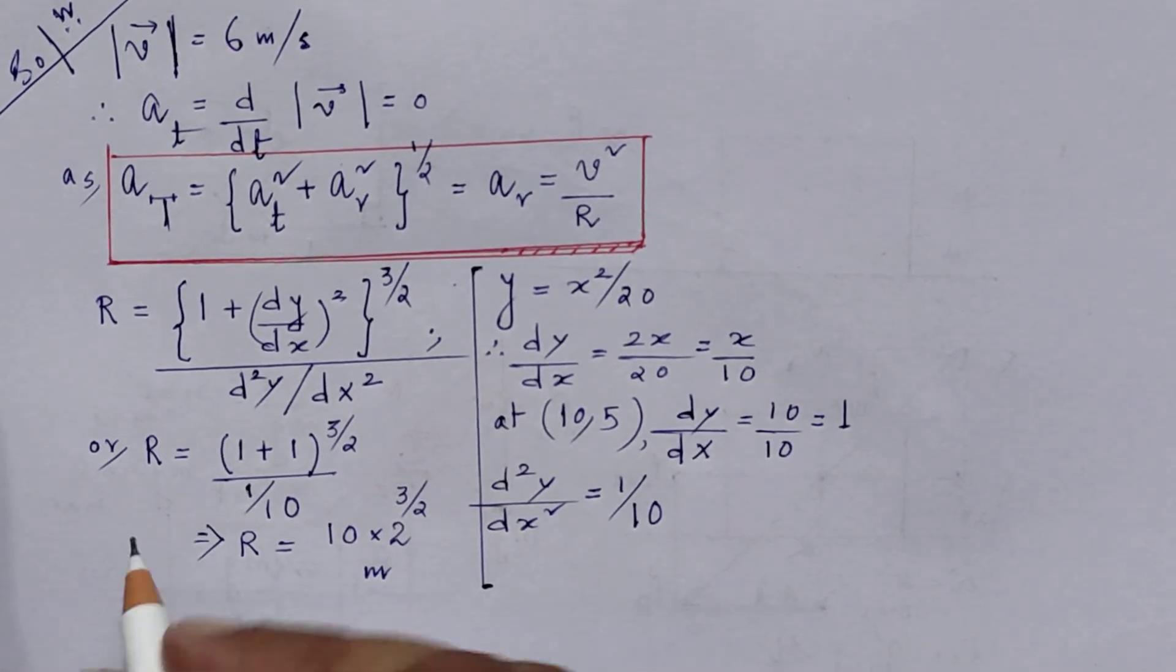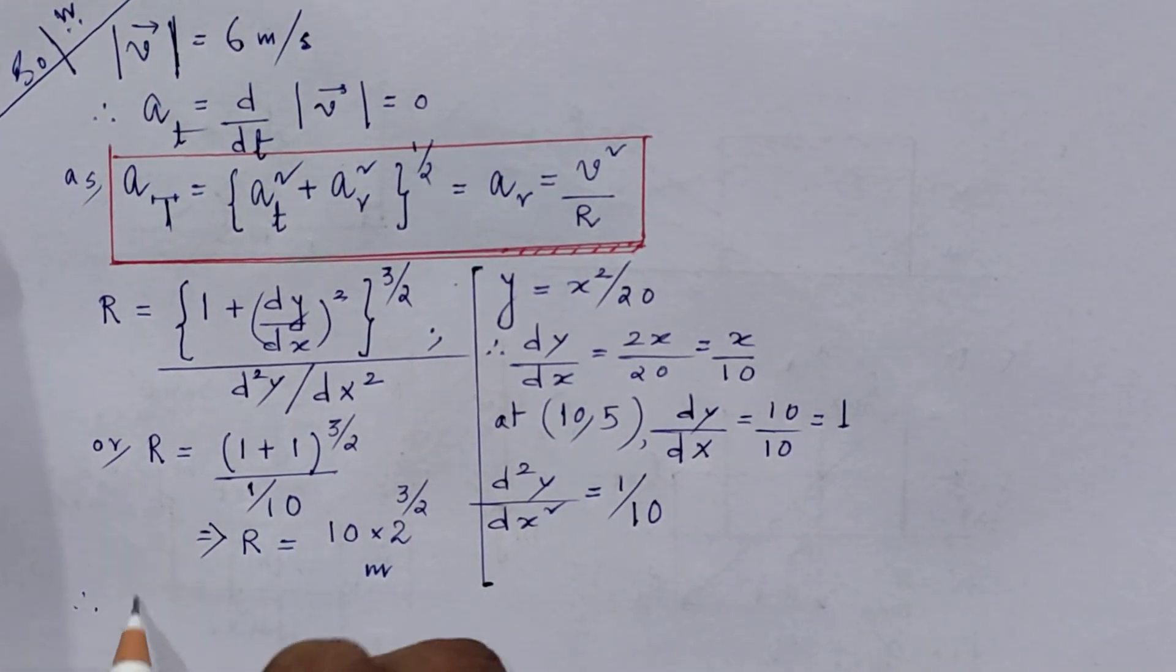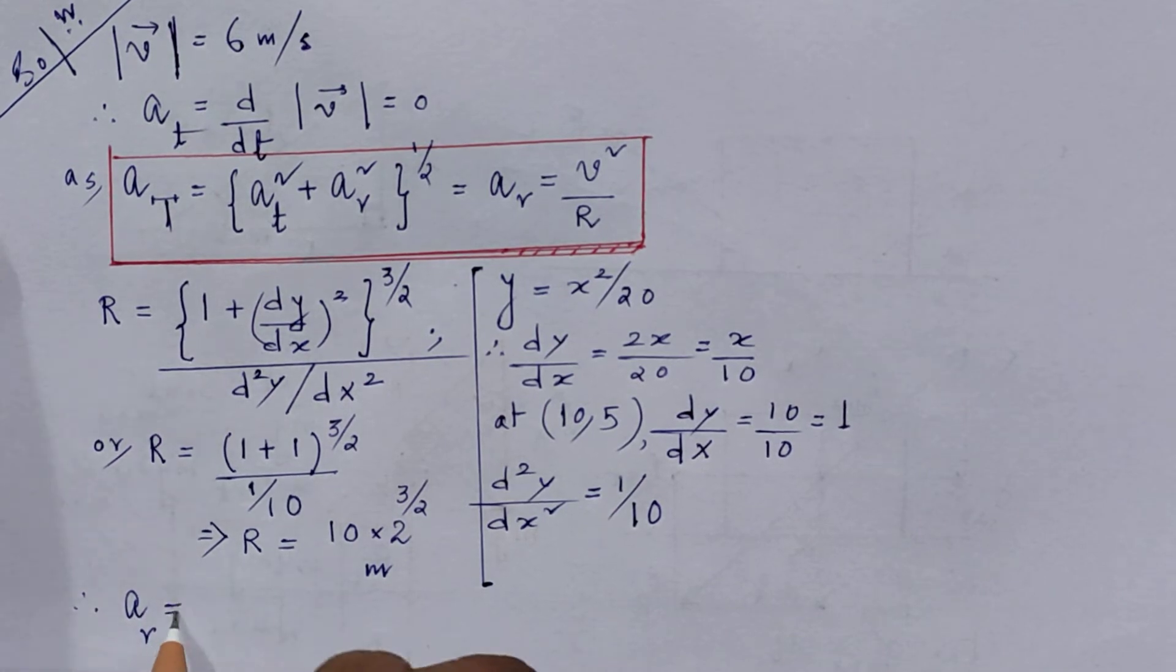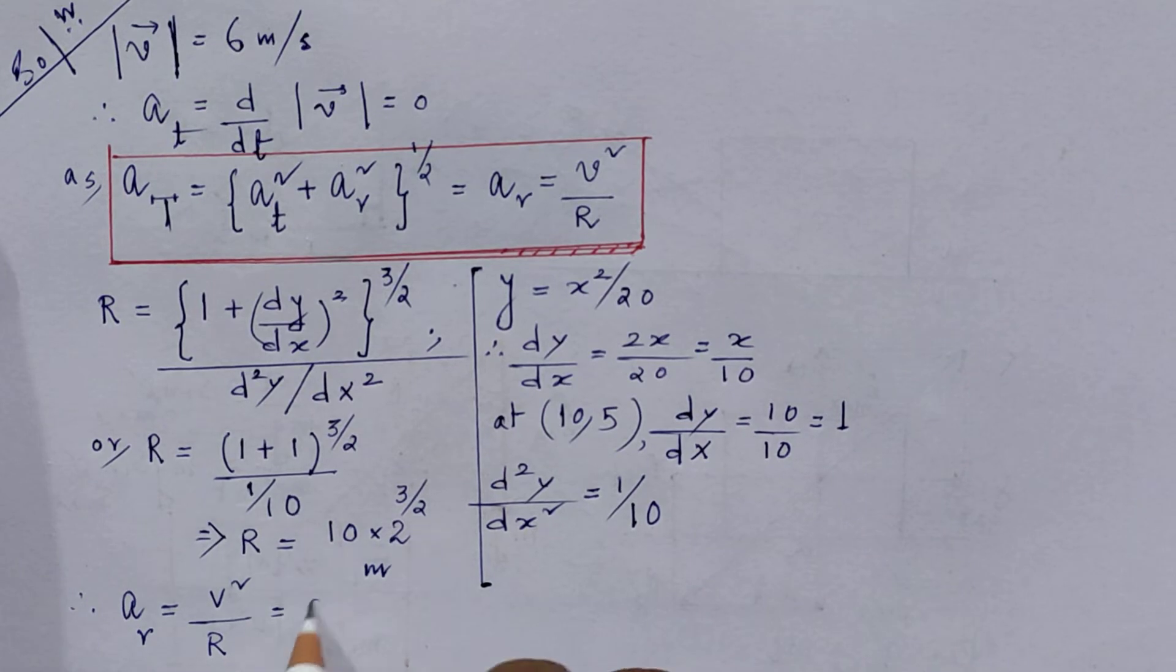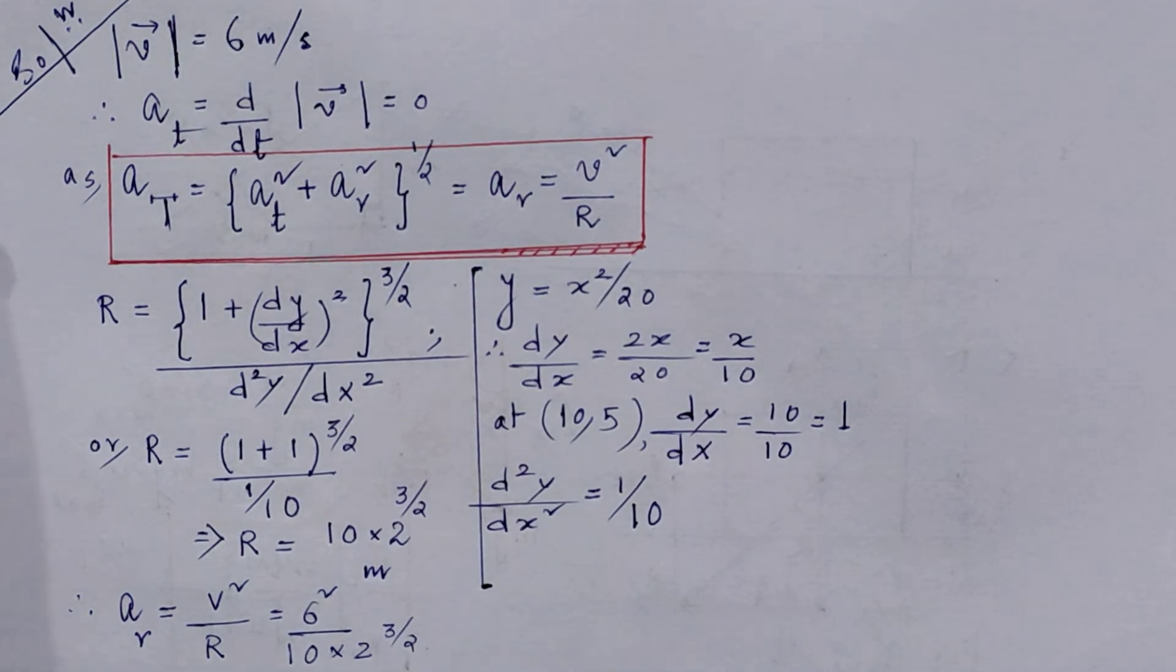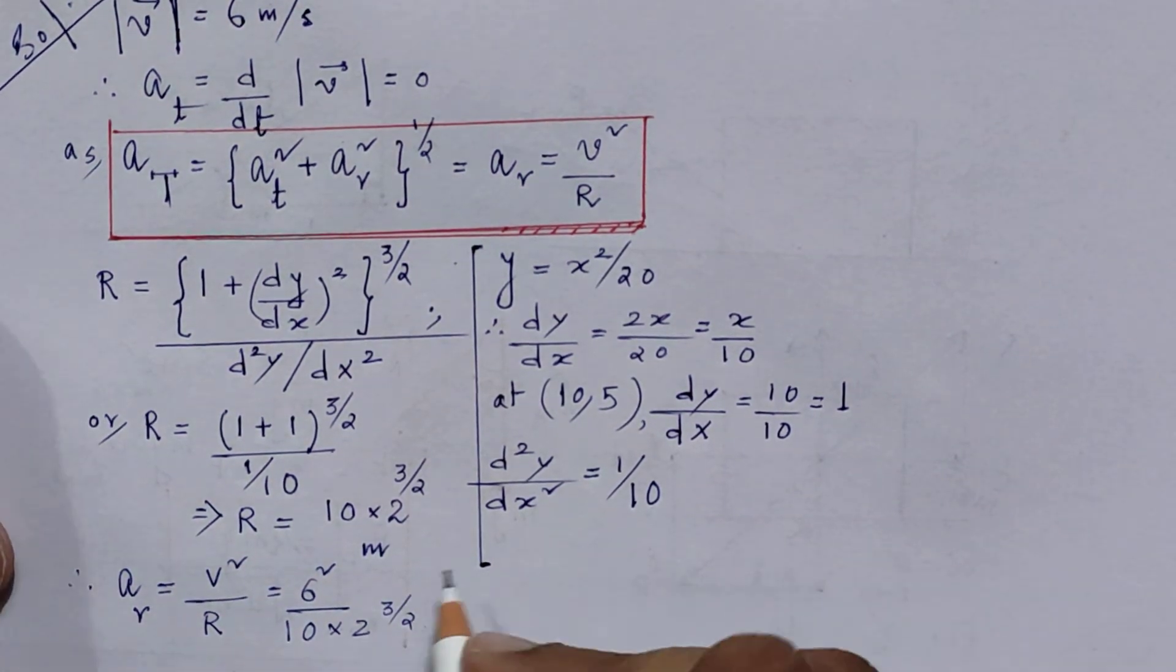So therefore, the radial acceleration is v squared by R, and v is 6. So 6 squared divided by 10 into 2 to the power 3/2.